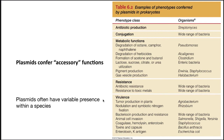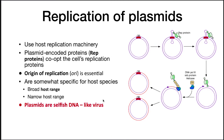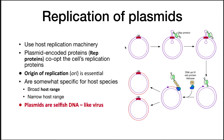For plasmid replication, plasmids use the host replication machinery. A rep protein binds the origin of replication, causing the replication machinery — DNA polymerase, single-stranded binding proteins, helicase, etc. — to come in and make a copy of the plasmid. The origin of replication is essential to this process. These origins are somewhat specific for host species, so a specific origin of replication means the plasmid is only found in specific hosts. Other plasmids have a broader host range with an origin that can be recognized by many different microorganisms.